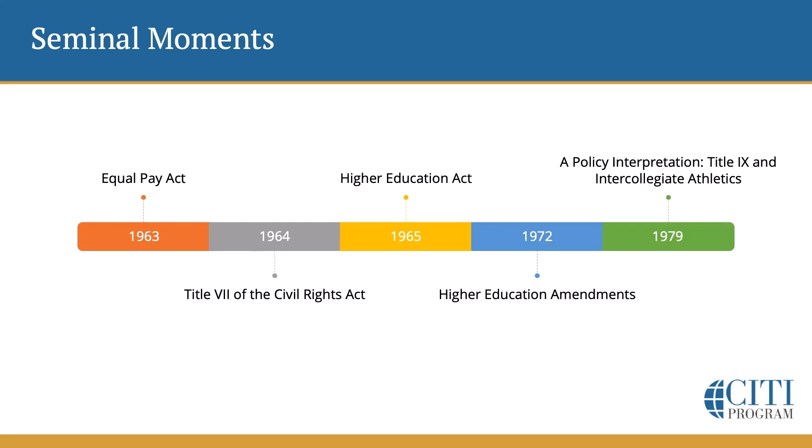Determined to bridge that gap, U.S. Representatives Edith Green and Patsy Mink worked together to enact legislation that would prohibit sex discrimination among educational programs that accepted federal funds. They ultimately ended up partnering with Senator Birch Bayh in order to be successful in the passage of the Education Amendments of 1972, which amended the Higher Education Act of 1965. One provision of the amendments, which most refer to as simply Title IX, broadly prohibited discrimination on the basis of sex.